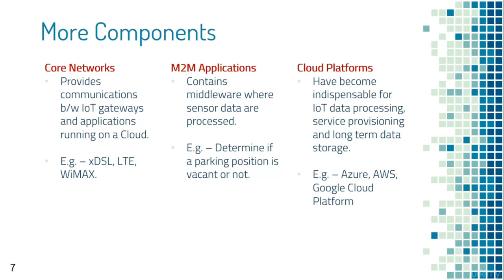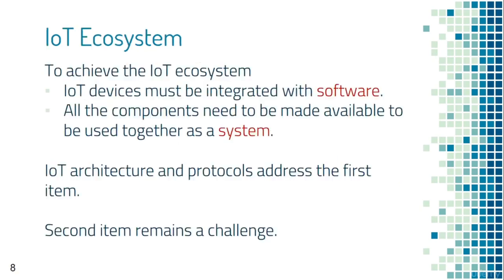Examples of cloud platforms include Google Cloud Platform, Amazon AWS, and Microsoft Azure. Once you have understood the components, the next point is the ecosystem. The six components are part of the ecosystem, but to achieve that IoT ecosystem you need two major steps: all IoT devices must be integrated with the software, and all components need to be made available to be used together as a system.